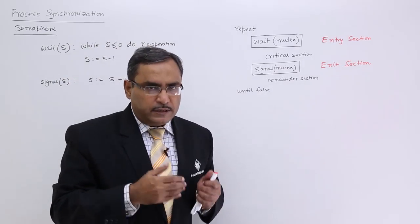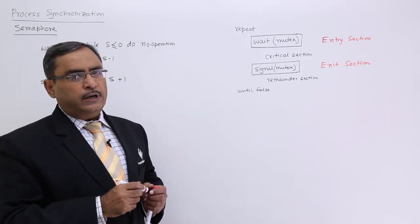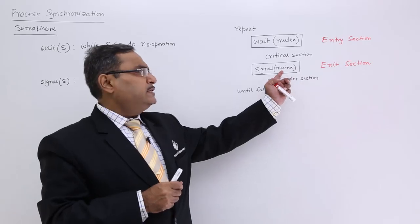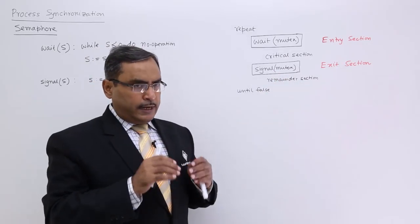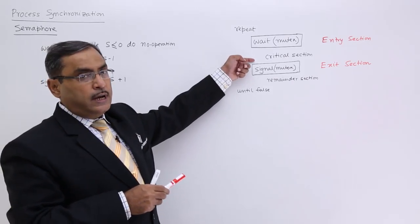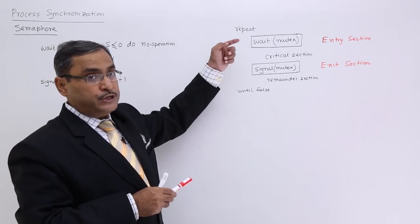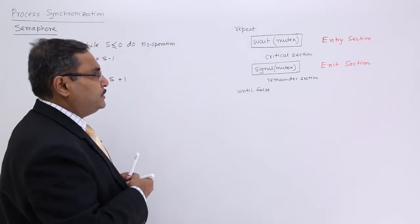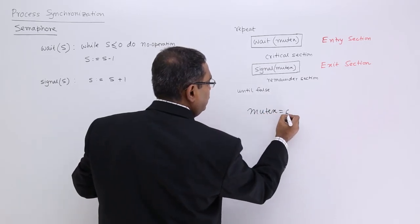Let me explain it further. Let us suppose there is one semaphore variable called mutex — actually it is a short form of mutual exclusion. A process can enter into the critical section when the wait operation completes without falling into an infinite loop. Let us suppose initially mutex is equal to 0.